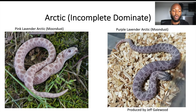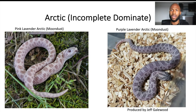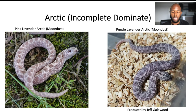The arctic lavender is also known as the moon dust. On the left hand side he has a pinkish lavender arctic, and on the right hand side a purple arctic lavender. Both of these snakes are currently on sale on MorphMarket.com — they're like $2,000 or a little more, so they're pretty pricey. I really like the one on the right, the purple lavender arctic. It actually displays a lot of the arctic characteristics: the background is a reduced purple color and the pattern is outlined in a darker purple. That's really the characteristics of the arctic gene.